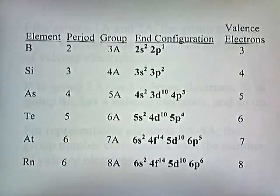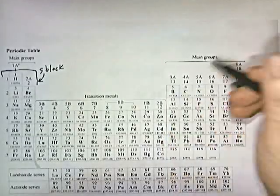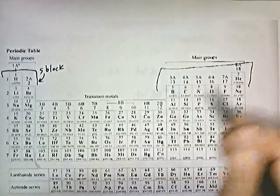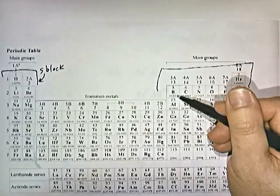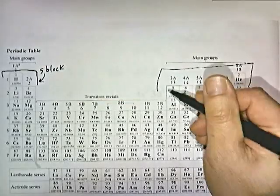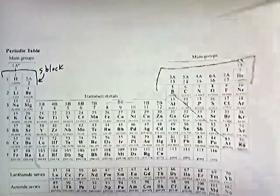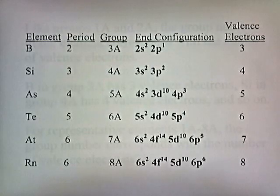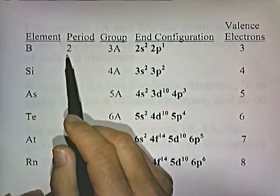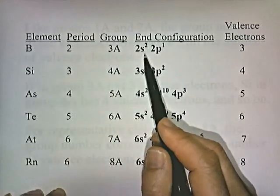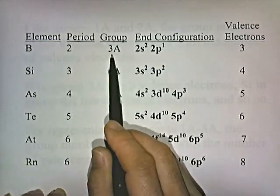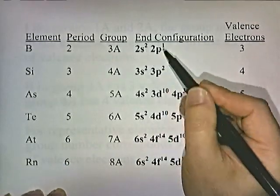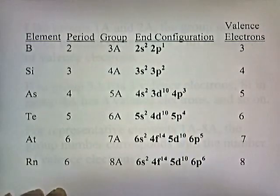Now we're going to focus on elements going diagonally: boron, silicon, arsenic, tellurium, and astatine. You should notice a pattern — boron is in period 2, and the end configuration starts with 2-something. Also, boron is in group 3, and 2 plus 1 gives 3, so it has three valence electrons.